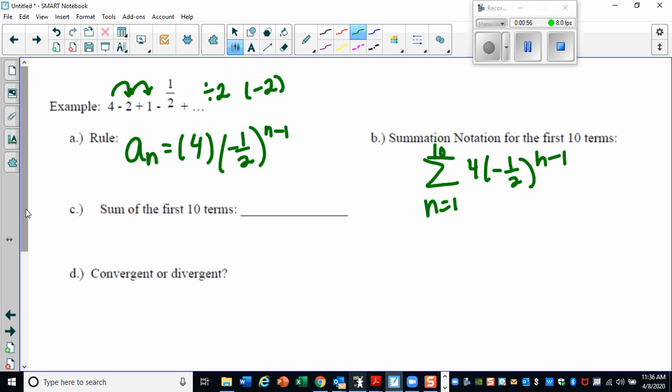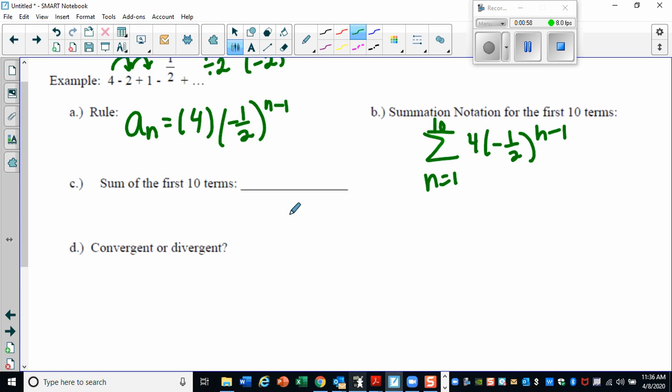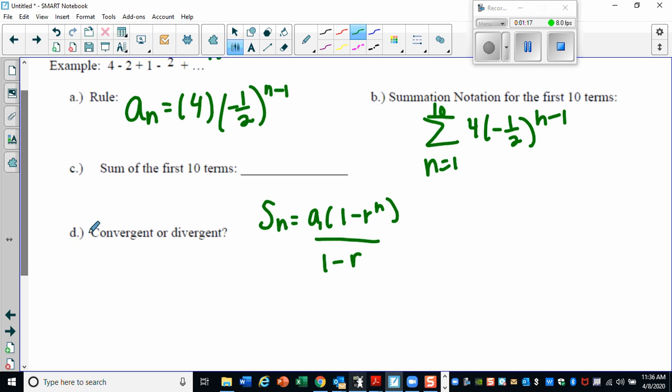And the next thing we want to do is find the sum of the first 10 terms. So let's use our summation formula, which is your first term times one minus your ratio raised to how many terms you're summing, all divided by one minus your ratio. Now this is a fraction, so just be careful when you're plugging this stuff into your graphing calculator.